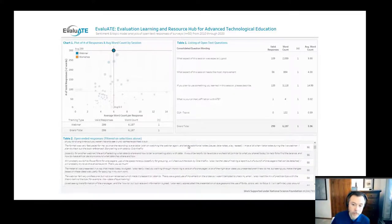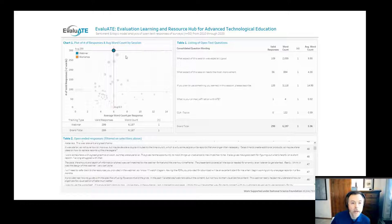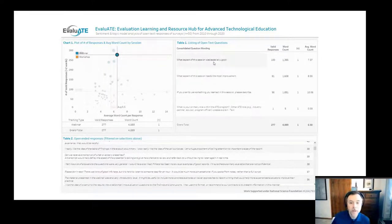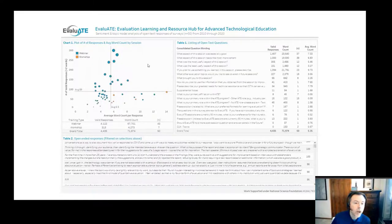This was very helpful because as we were going through these, we would see slight differences in question formats. One question may say 'what aspect of this webinar was especially good' or 'what aspect of this workshop was especially good,' or 'what aspects' with an S 'of this workshop or webinar were especially good.' This was very helpful for us to understand that we needed to consolidate those questions.